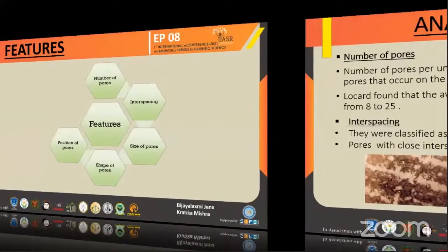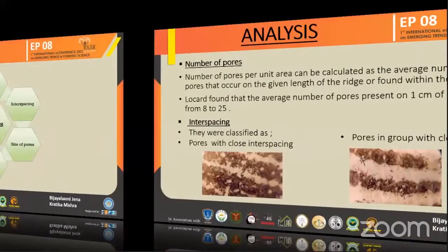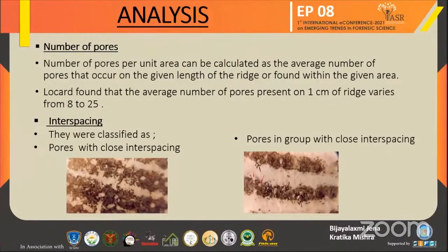The first feature is the number of pores. Under 50x magnification, the average length of the ridges under view is found to be about 0.5 cm. Pores are counted on the ridges at random and the average number of pores per centimeter of ridge is calculated. Locard found that the average number of pores present on 1 cm of ridge varies from 8 to 25.